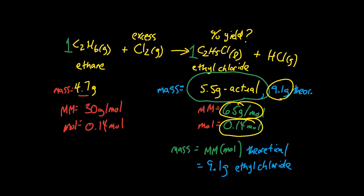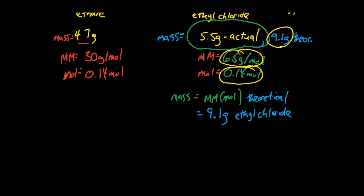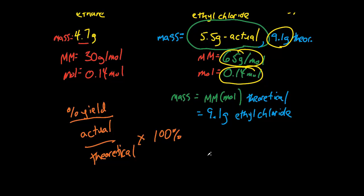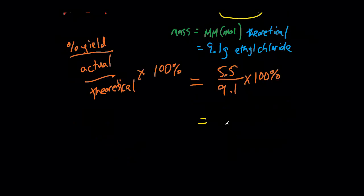Well, from there it's pretty easy because if we know that percent yield is the actual over the theoretical times 100 percent, what we get is 5.5, which is our actual, over 9.1 theoretical, times 100 percent, to ultimately get around 60 percent.